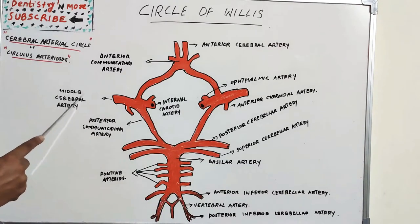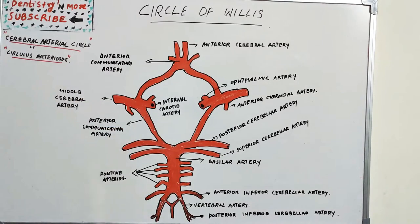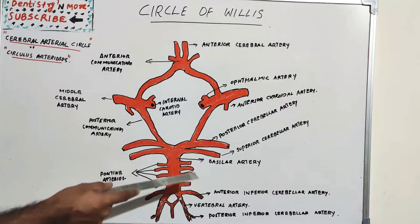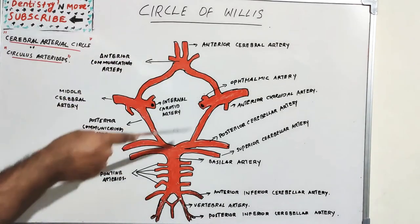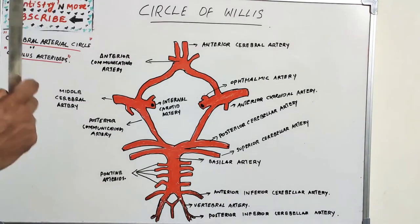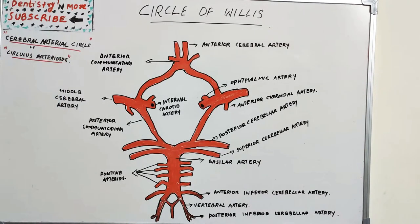The middle cerebral arteries supply the brain but are not considered part of the Circle of Willis. Other arteries such as the basilar artery, superior cerebral artery, anterior inferior cerebral artery, posterior inferior cerebral artery, and vertebral artery are also not part of it. The Circle of Willis consists of four paired arteries and one unpaired artery.